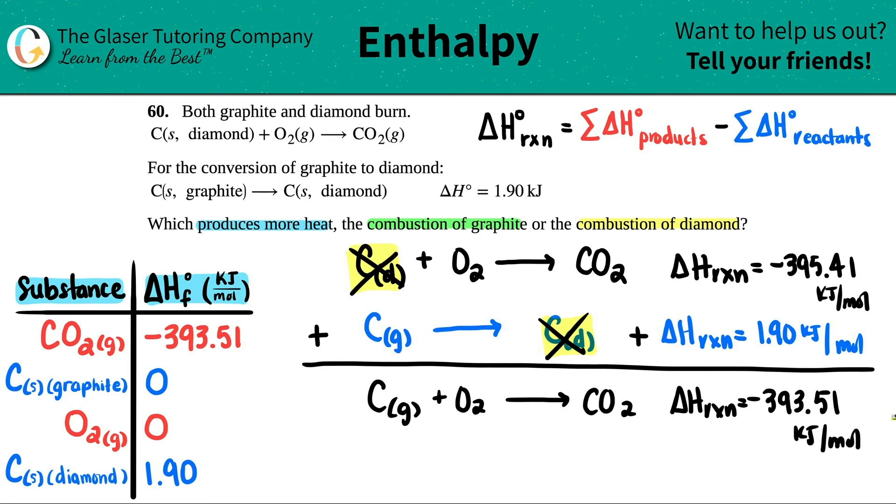Now we have our two delta H values. The combustion of graphite was a negative 393.51, and the diamond was negative 395.41. Which one produces more heat? Now there's a trick here. Remember, there's no such thing as negative energy. The negative in both of these answers just means that this amount of heat is being released. Always look at it in terms of a positive value. The negative doesn't mean that it's an actual negative number, it actually means that it's just being released.